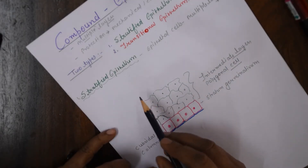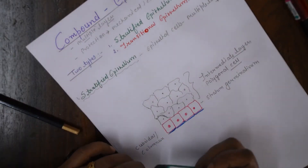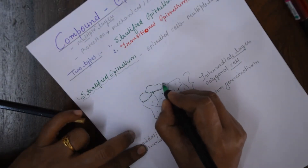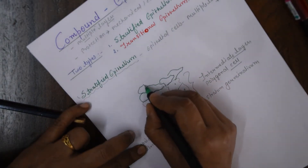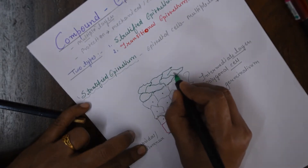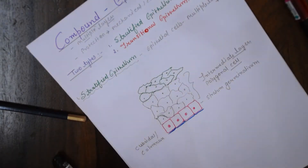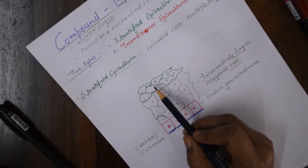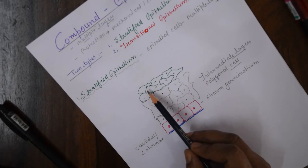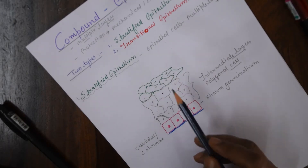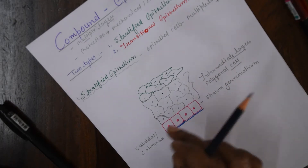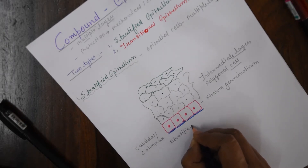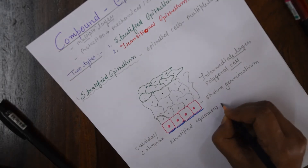On the superficial layer, there are another kind of cells which could be squamous epithelial cells. Stratified epithelium can be classified into different types based on the types of cells present on the superficial layer. Since squamous epithelial cells are shown here, this diagram represents stratified squamous epithelium.